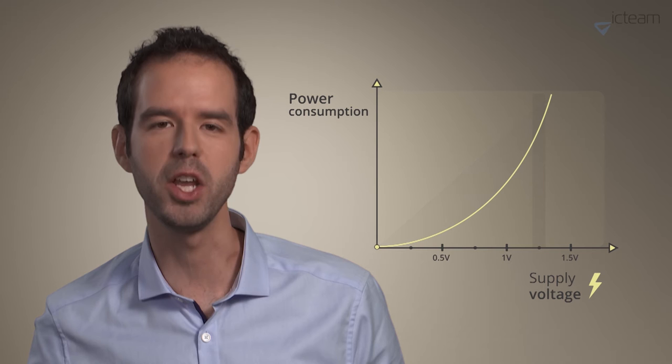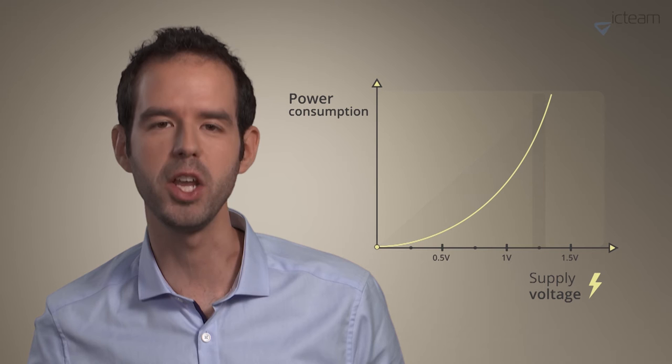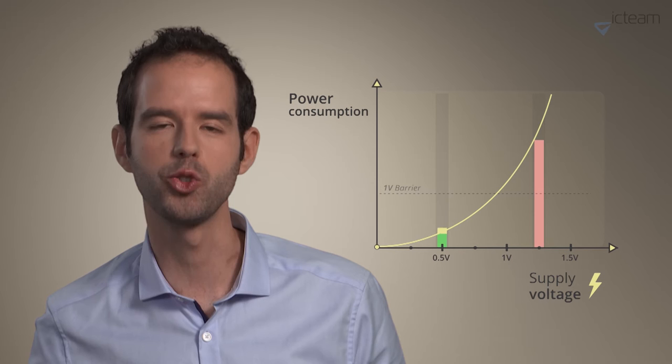We thus need to save power. But how? Well, actually there is a simple solution. The power consumption of digital circuits is proportional to the square of their supply voltage. As circuits typically operate between 1 and 3 volts, scaling down to 0.5 volts will enable strong power savings.